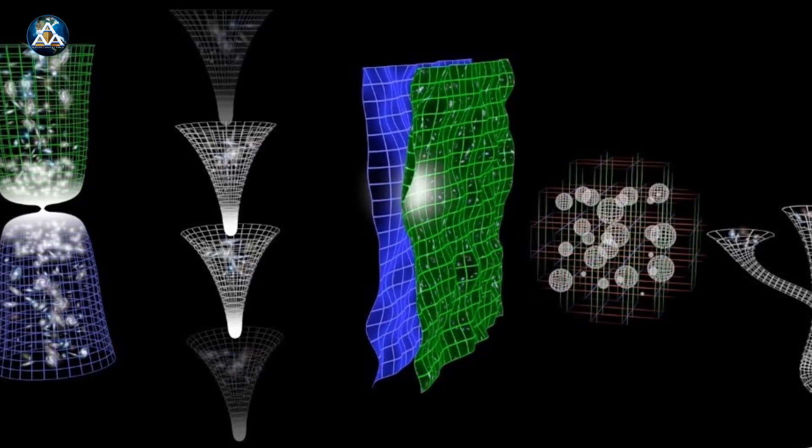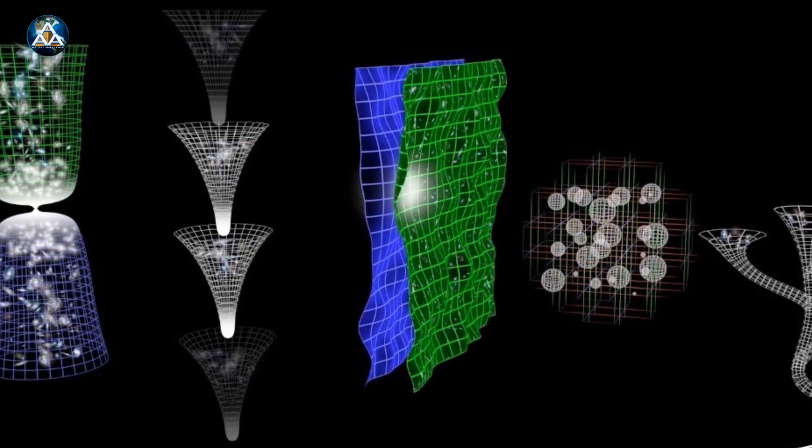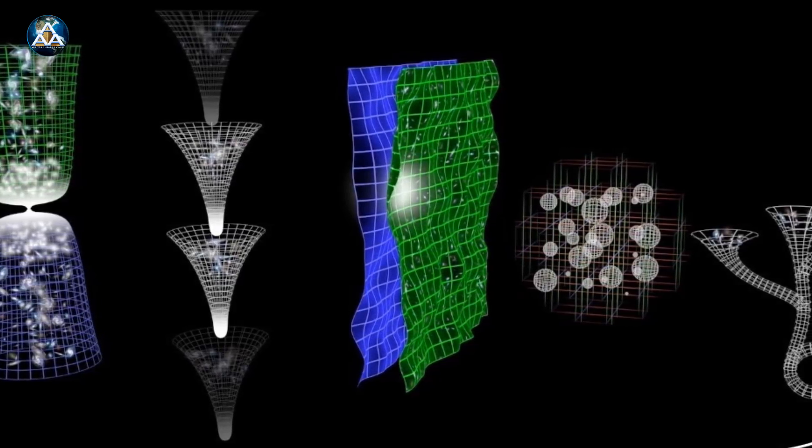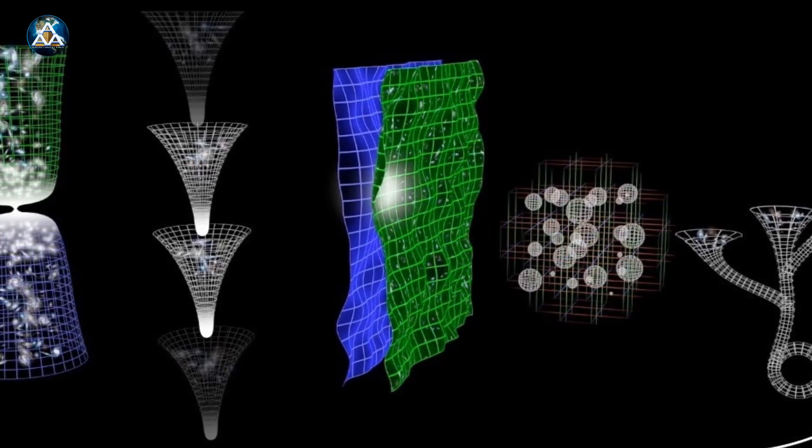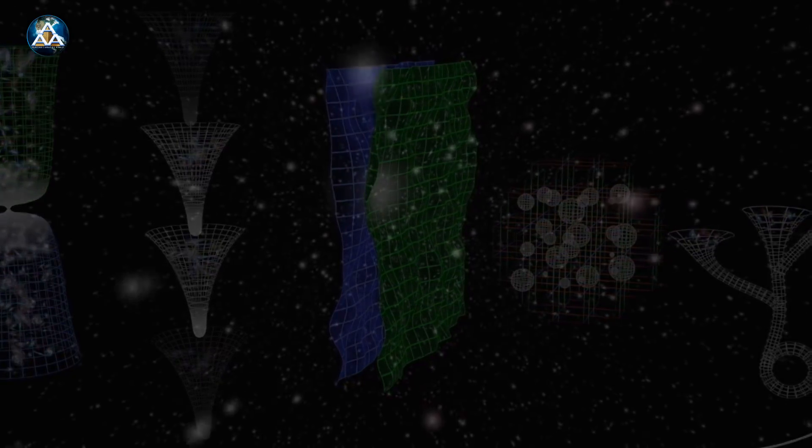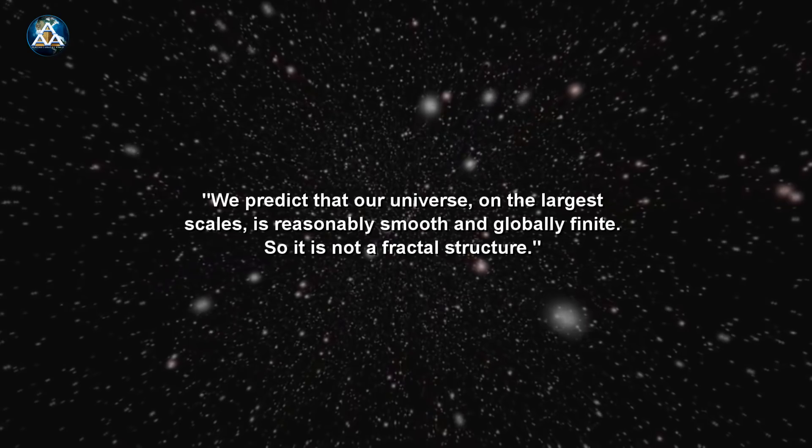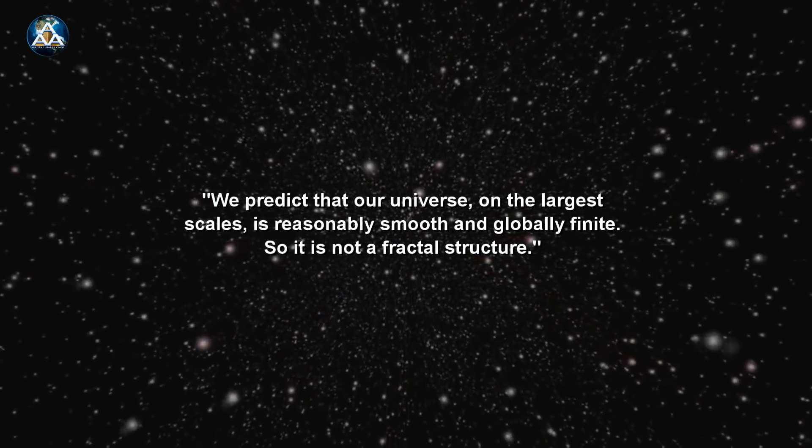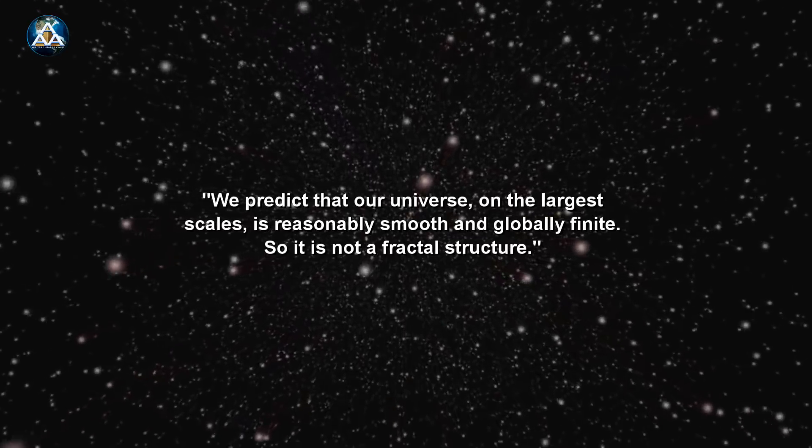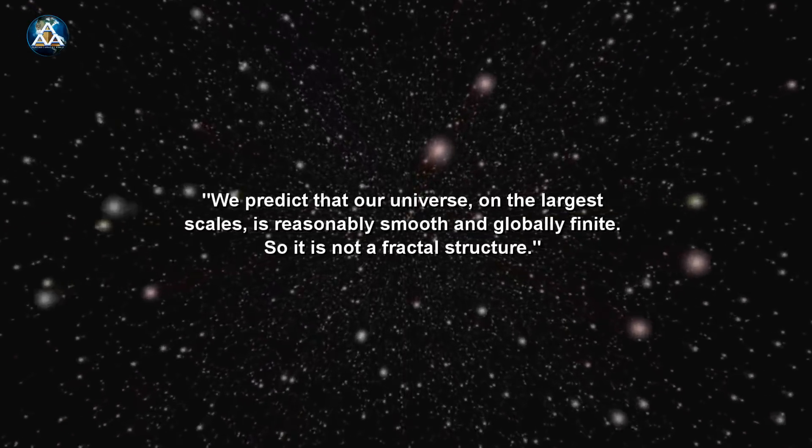According to the new theory, the early universe did have a boundary, and that's allowed Hawking and Hertog to derive more reliable predictions about the structure of the universe. We predict that our universe, on the largest scales, is reasonably smooth and globally finite. So it is not a fractal structure, Hawking said.